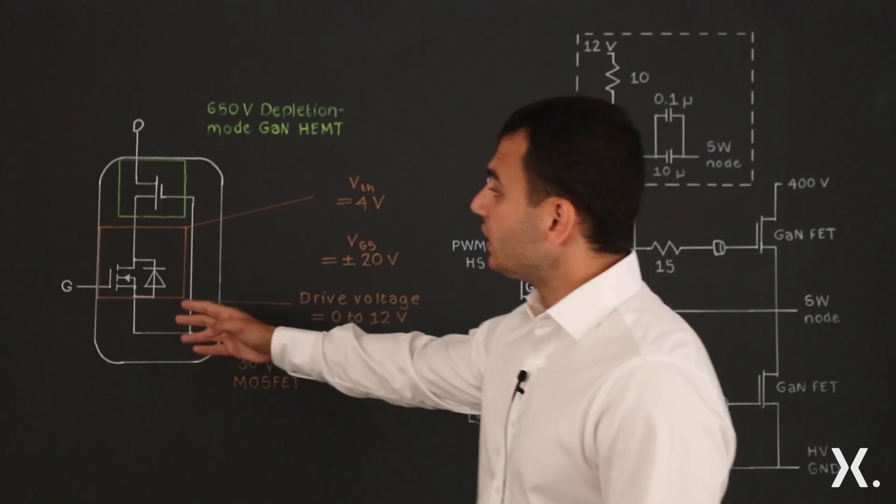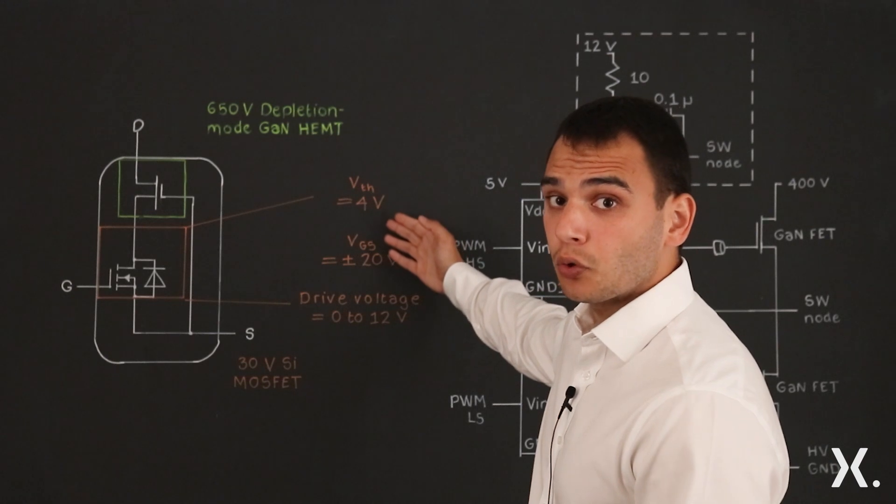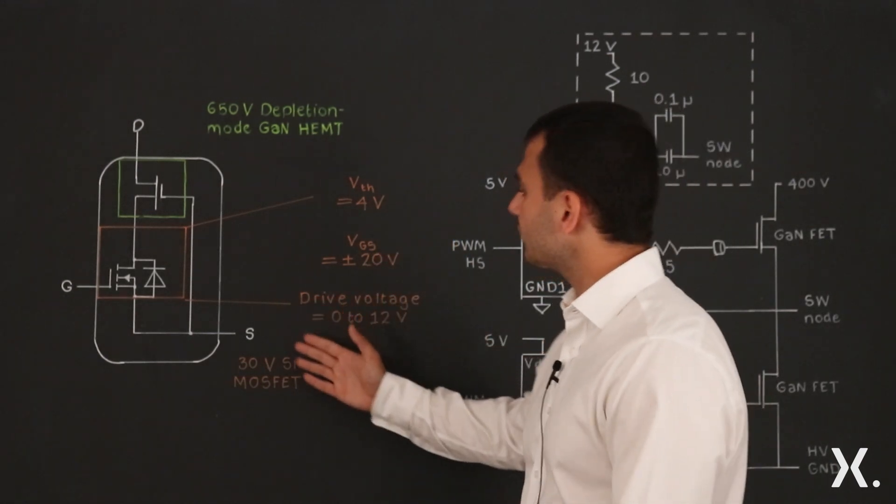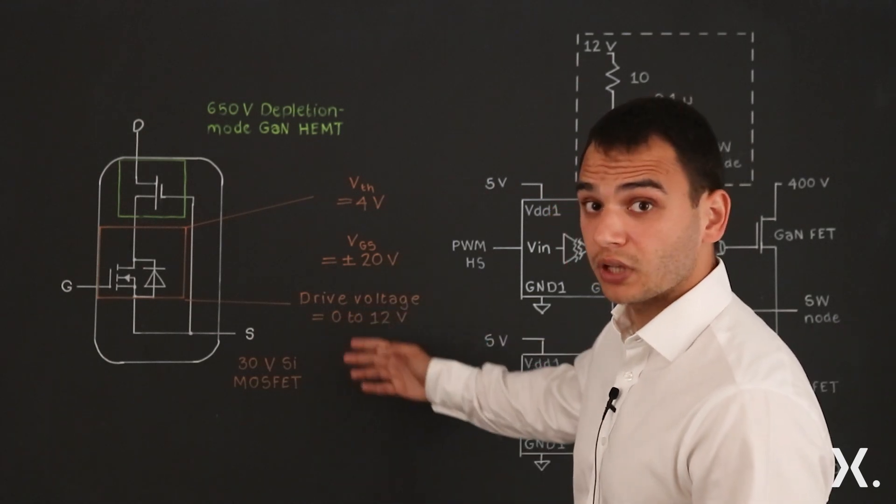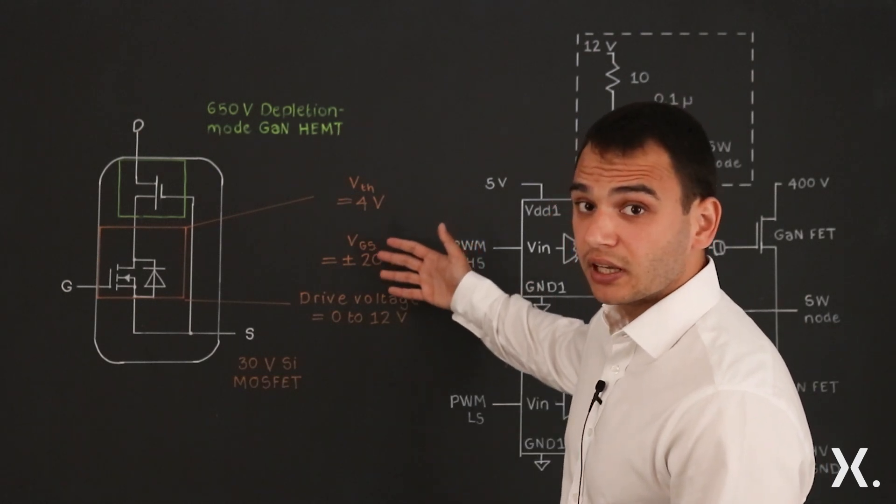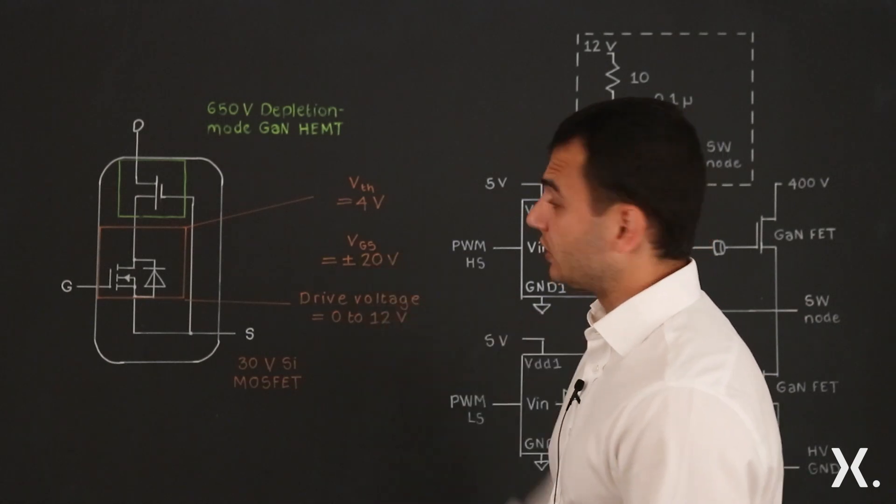So essentially you get the benefit of driving the silicon MOSFET by having a high threshold voltage of 4 volts, and because of that you can drive the device from 0 to 10 or 0 to 12 volts, and you have the robustness of the silicon gate oxide which is rated at plus minus 20 volts.